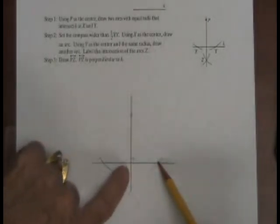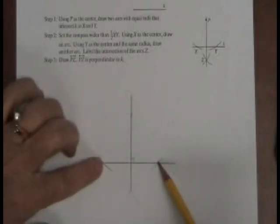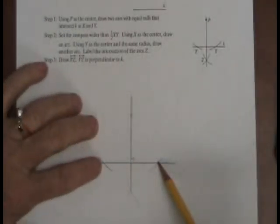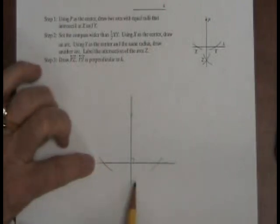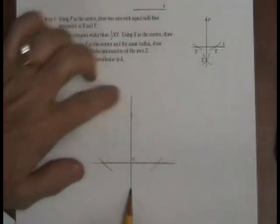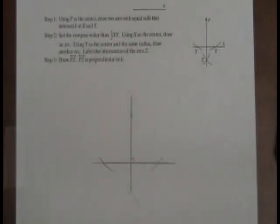You set it here without changing that measurement, you set it here and you come down here and you make this arc. Where those two arcs intersect establishes the perpendicular. All right, there we go, we're going to be moving on.